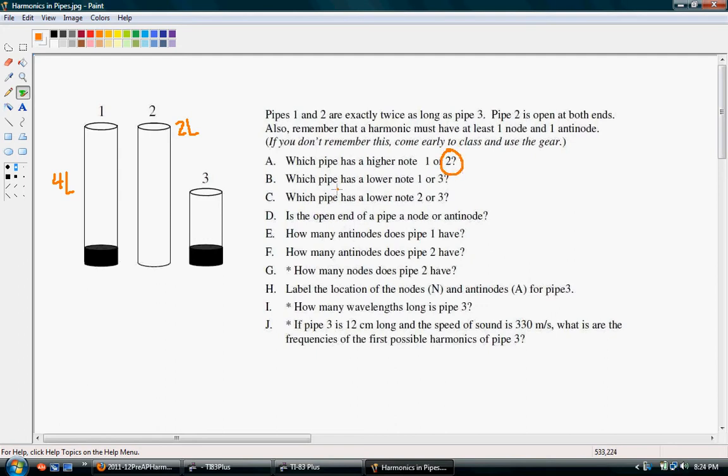Which pipe has a lower node, 1 or 3? Well, since this is a closed pipe too, it's also going to be 4L. But remember, this is 4 of these lengths, while this is only 4 of these little lengths. So it's only going to be half as much. This is going to have a higher note because it has a shorter wavelength. But it asks which pipe has a lower note. That would be pipe 1.